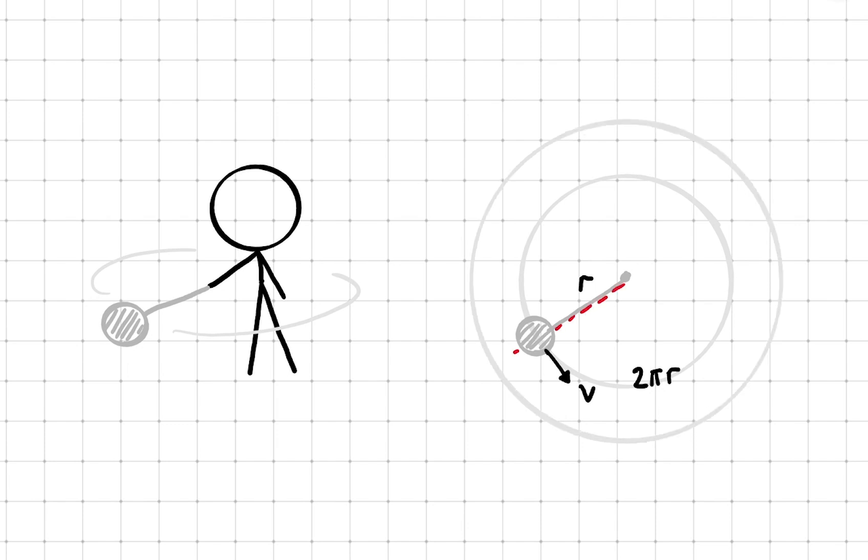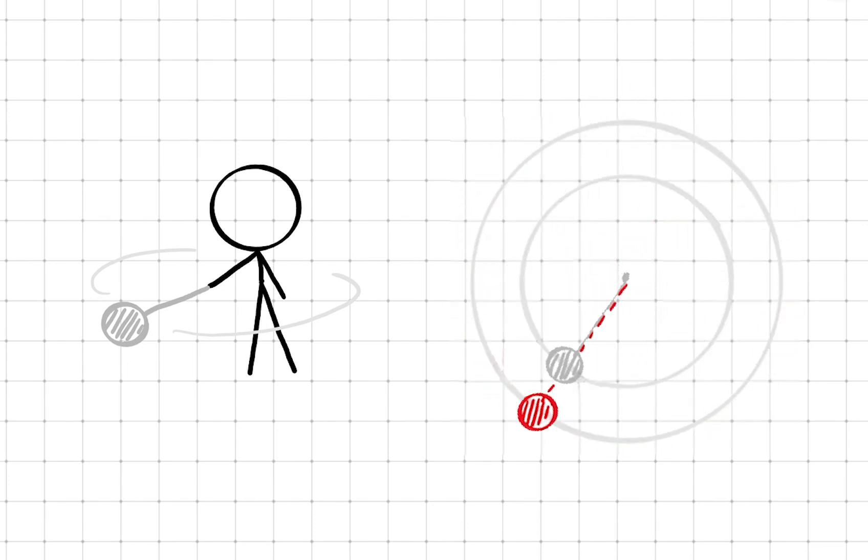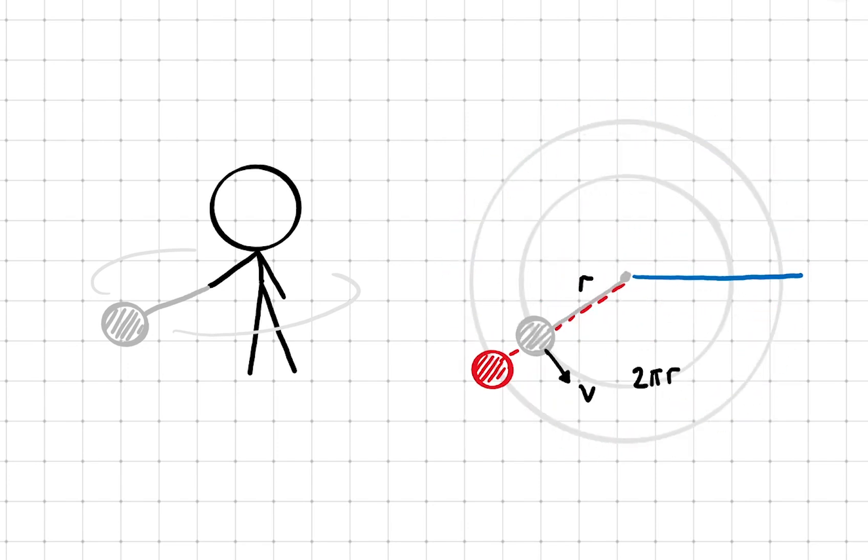If he swings another ball, but attaches it to a longer piece of string, that would increase the radius of the circular path. As he swings both balls, he decides to keep them aligned, one on top of the other. Keeping them aligned means that they need to sweep out the central angle at the same rate. In other words, they must have the same angular speed.